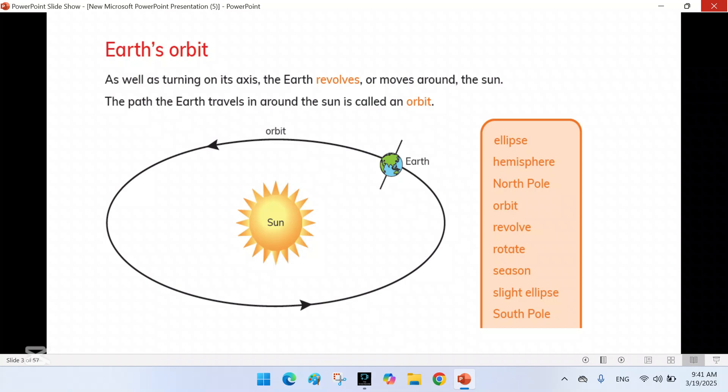The Earth moves around the sun in a fixed path called an orbit. This orbit is slightly oval in shape, which is known as an ellipse. Because of this elliptical shape, the Earth is sometimes closer to the sun and sometimes farther away.